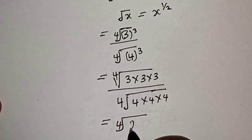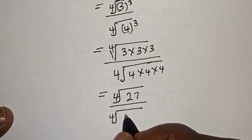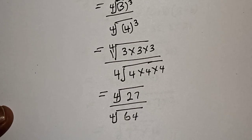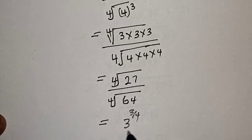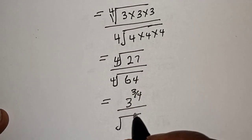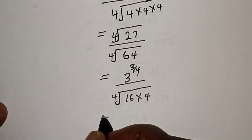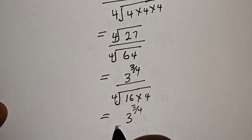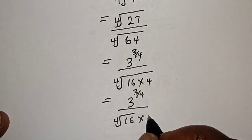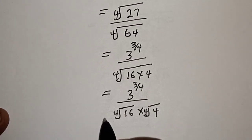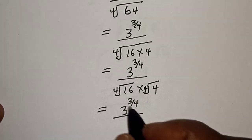Then this is equal to the 4th root of 27 over the 4th root of 64. This is equal to 3 raised to power 3 over 4, over the 4th root of 16 multiplied by 4. Then this is equal to 3 raised to power 3 over 4, over the 4th root of 16 multiplied by the 4th root of 4.